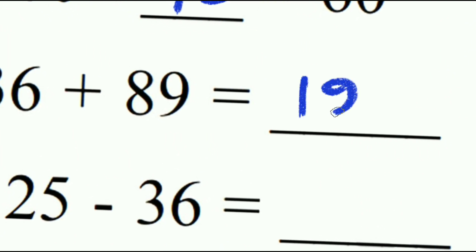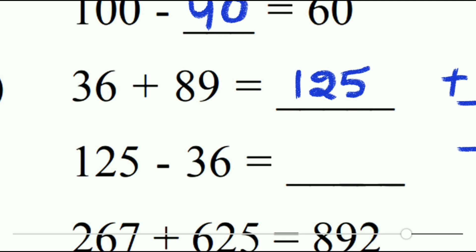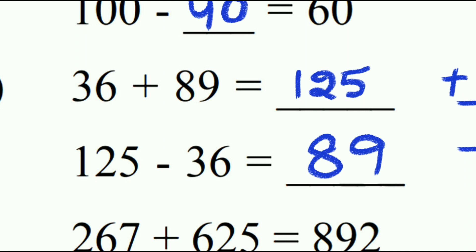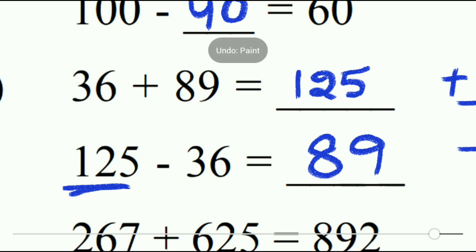The sum is 125. When we subtract one addend from the total sum, 125 minus 36 gives us the remaining addend, 89. We can clearly see 125 is the answer, but we can verify it as well.